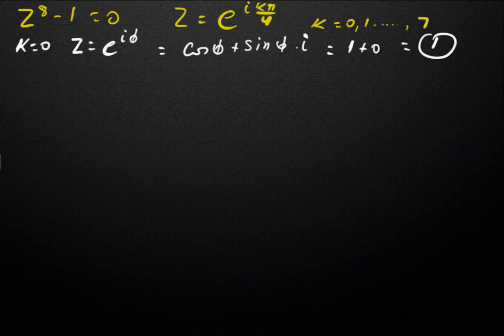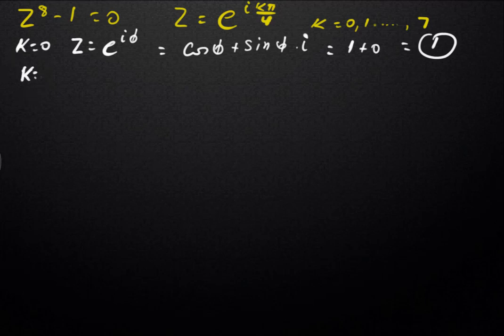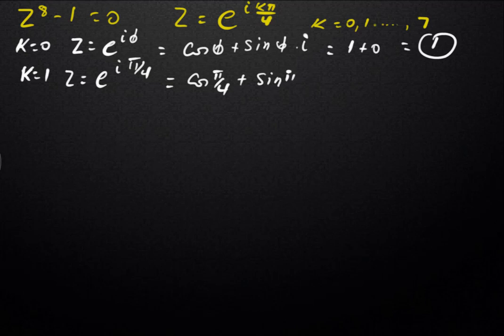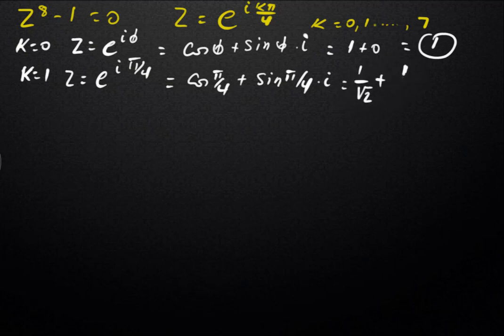When k is equal to 0, we replace it: z is equal to e to the power of i·0, which is cosine 0 plus i sine 0, so 1 plus 0 equals 1. That is the first root. When k is equal to 1, z is equal to e to the power of iπ/4, which is cosine π/4 plus i sine π/4, giving us 1 over √2 plus 1 over √2 times i. That is the second root.